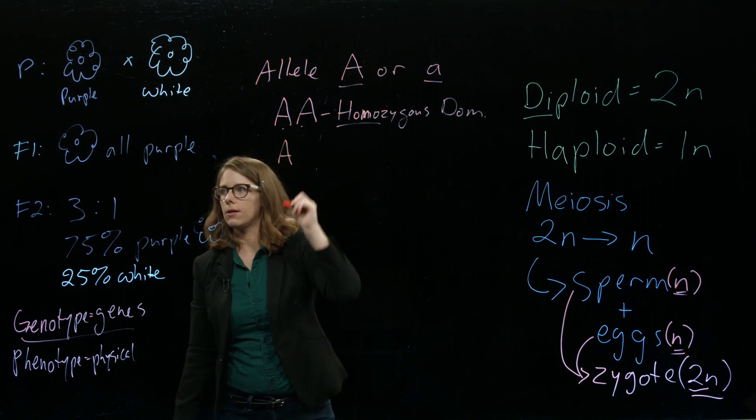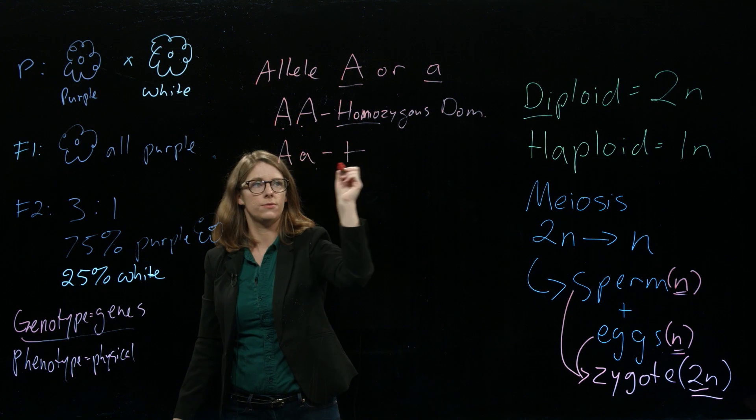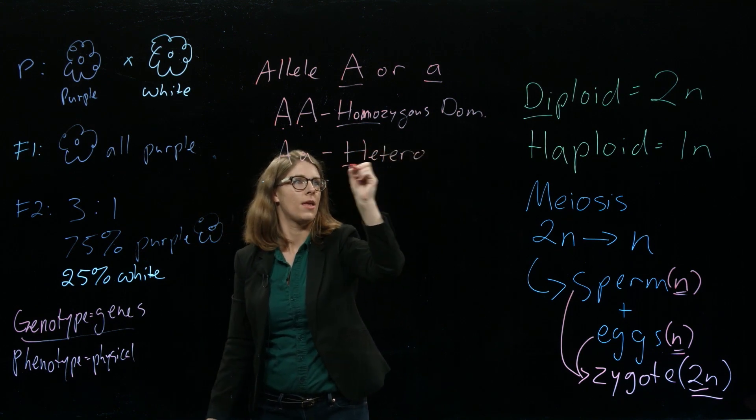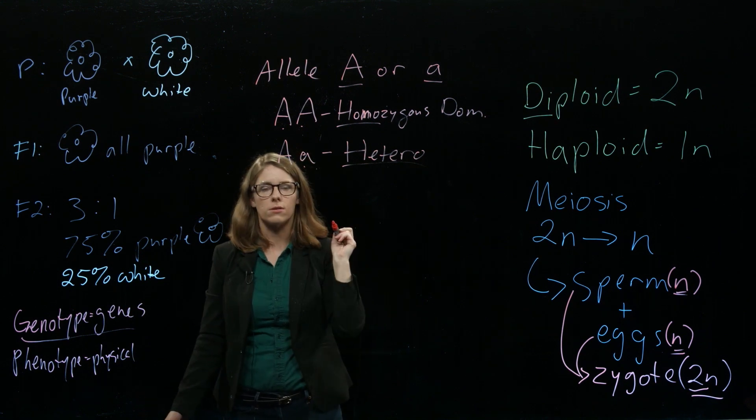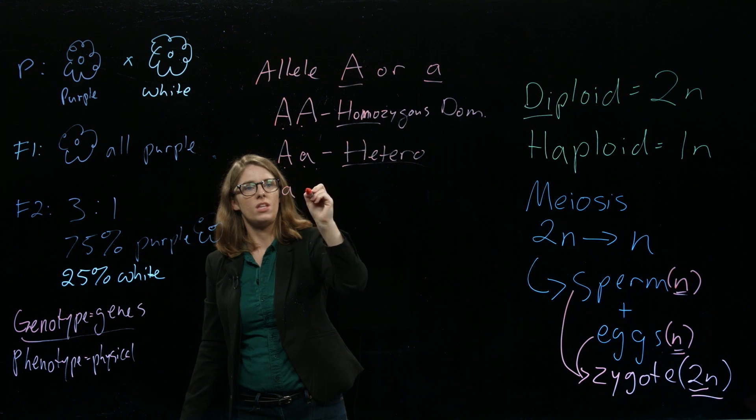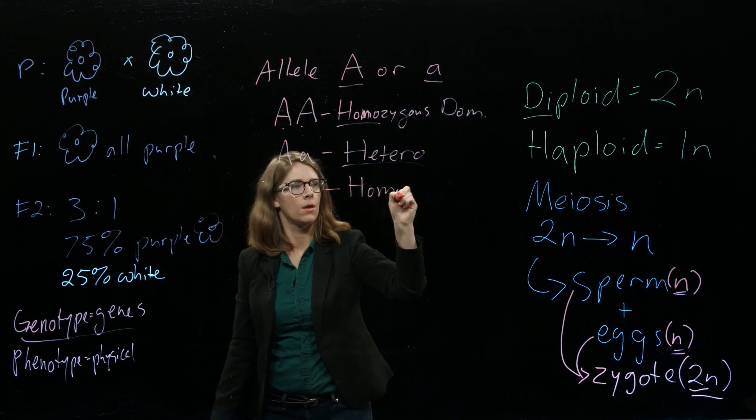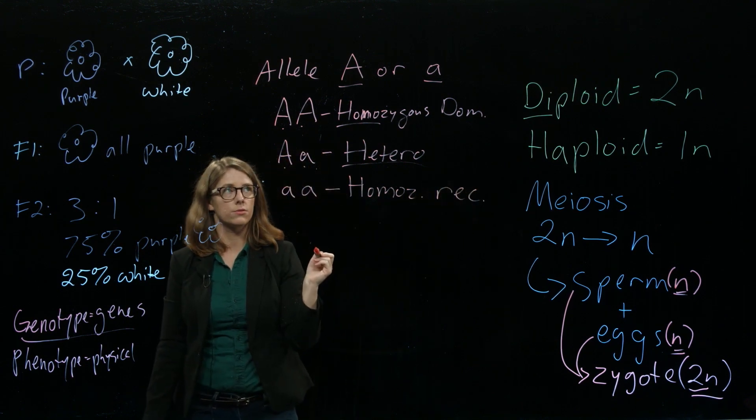If you've got one dominant allele and one recessive allele, they're different. You've got two different flavors. Heterozygous. Hetero means different. So heterozygous means that you've got two different kinds of alleles. If you've got two recessive alleles, they're both the same again. Homozygous. But now it's recessive, because you've got two recessive alleles.